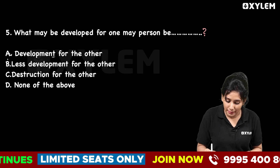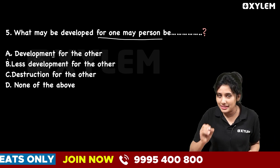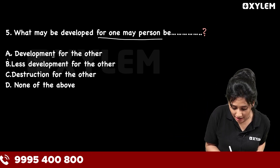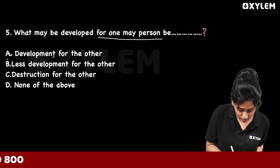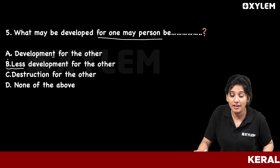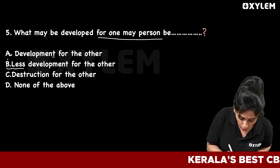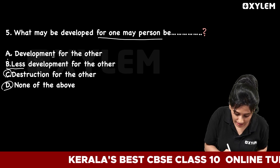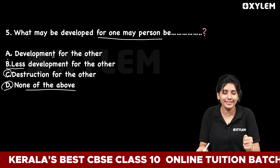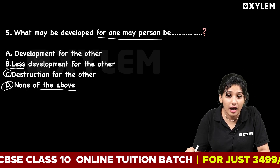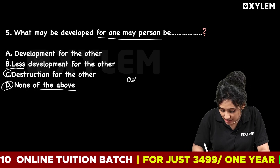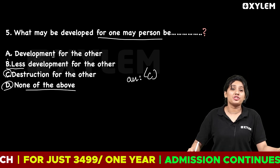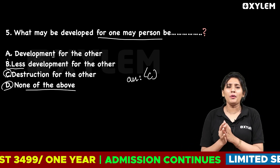The last question: What may be development for one person may be dash for the other? Option A: Development for the other. Option B: Less development for the other. Option C: Destruction for the other. Option D: None of the above. The correct answer is Option C — destruction for the other.